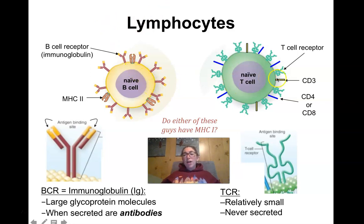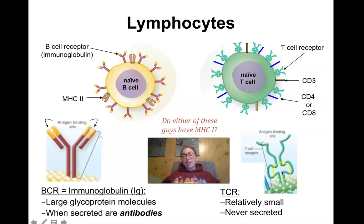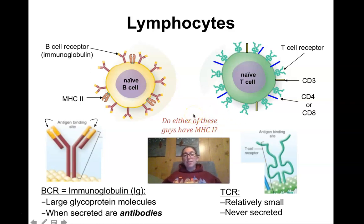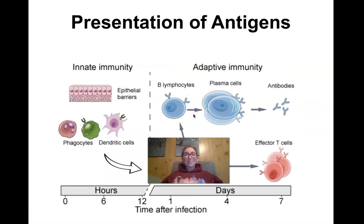T cells all have CD3 receptors, whether they are T helper cells or cytotoxic T cells. They also have either a CD4 or CD8 receptor, and additionally they have a T cell receptor, which is what actually recognizes antigen. The T cell receptor is much smaller than the B cell receptor, and unlike the B cell receptor — which can be secreted as antibodies — the T cell receptor always stays on the surface of the cell. It never gets secreted. And yes, both B and T cells do have MHC class I receptors, because all cells except red blood cells have MHC class I.